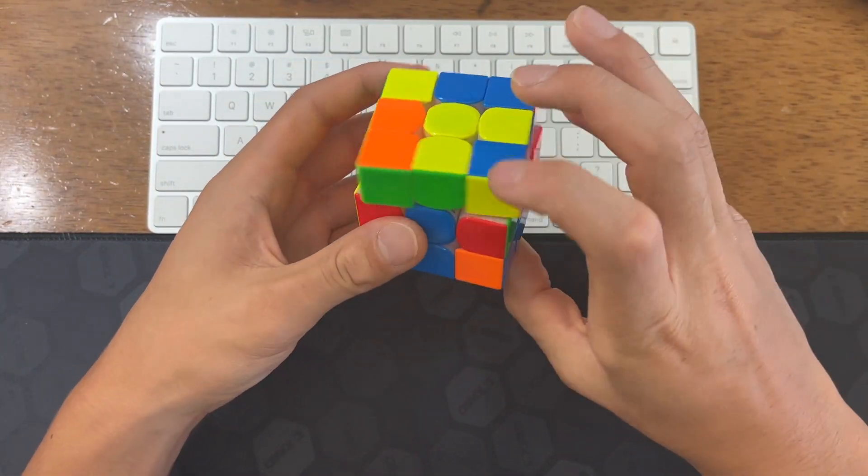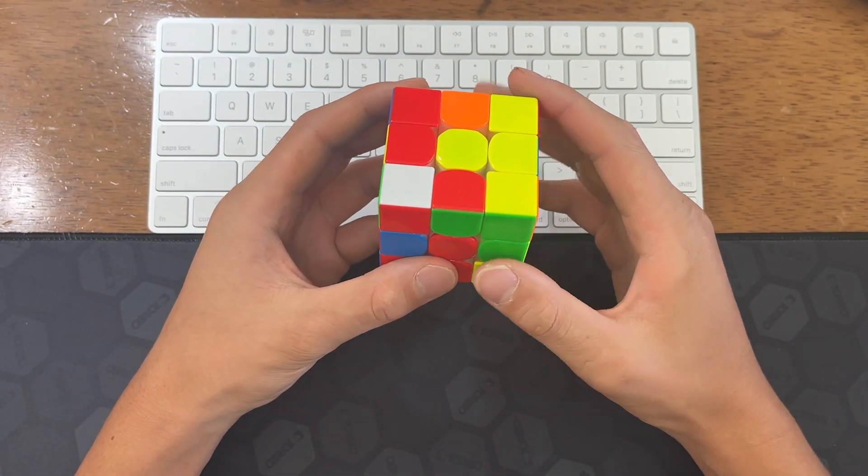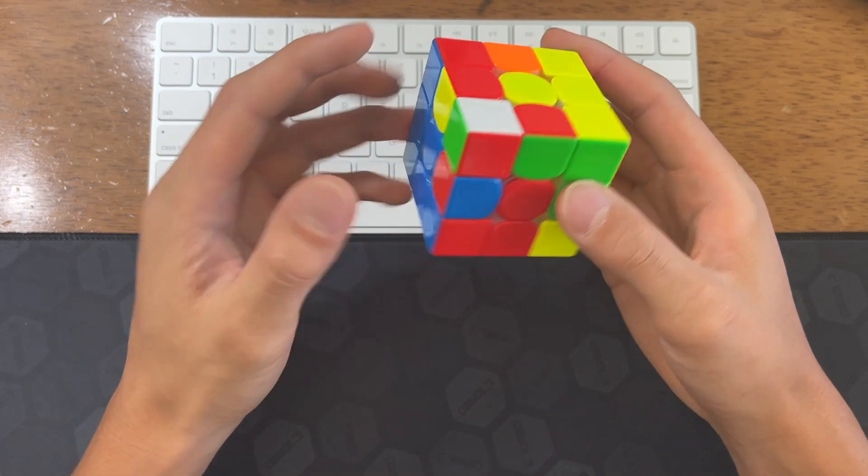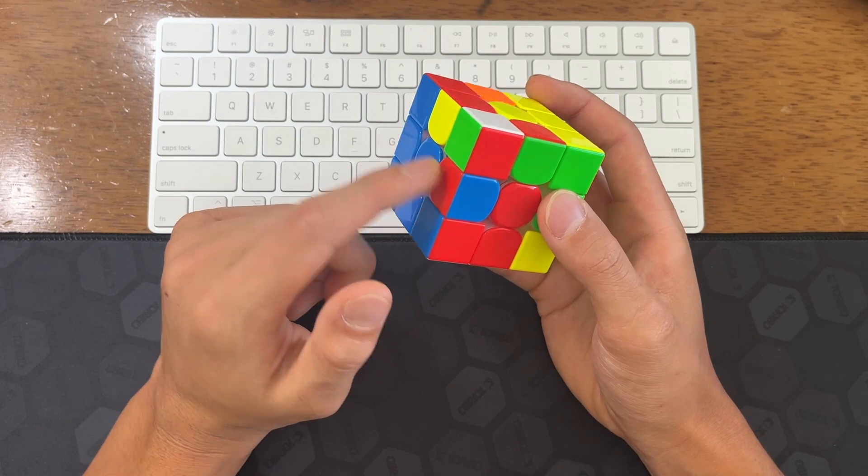I immediately saw these two. And then okay, this is a bad case, but since pseudo-slotting exists, it's pretty easy. You see here, this is in its slot but flipped, which is not good.